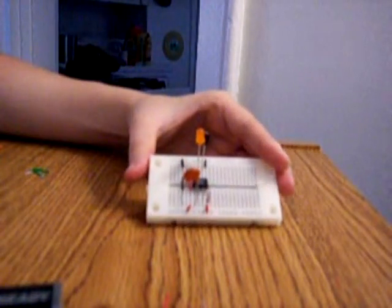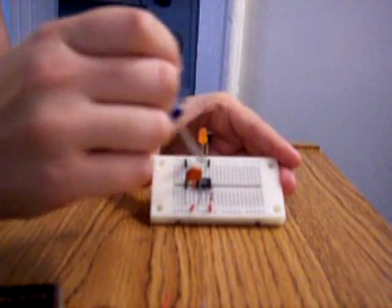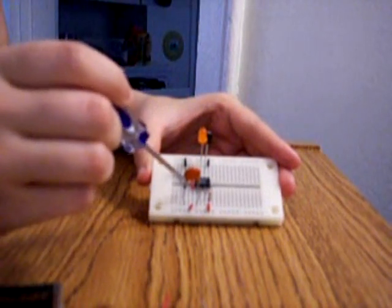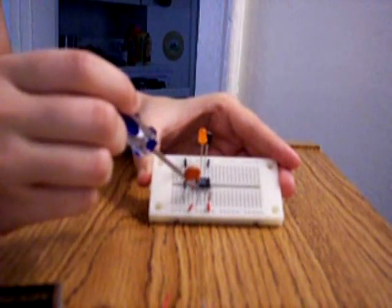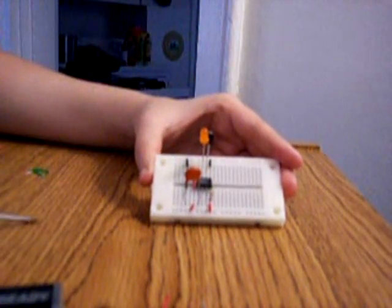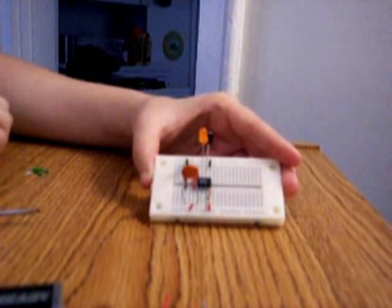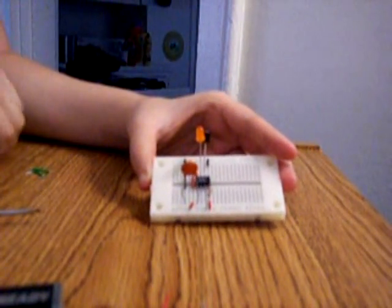Remember that when you count the pins on the chip you go from top to bottom on this side. So 1, 2, 3, 4. And on this side you go from bottom to top 5, 6, 7, 8. Try not to confuse those as you might burn the chip if you make too many mistakes.